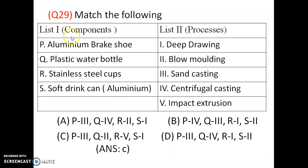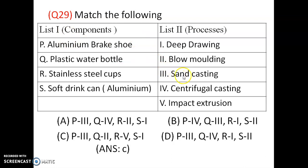Match the following. Plastic water bottles are usually made by blow molding process (Q2). Aluminum brake shoes are made by sand casting process (P — sand casting).